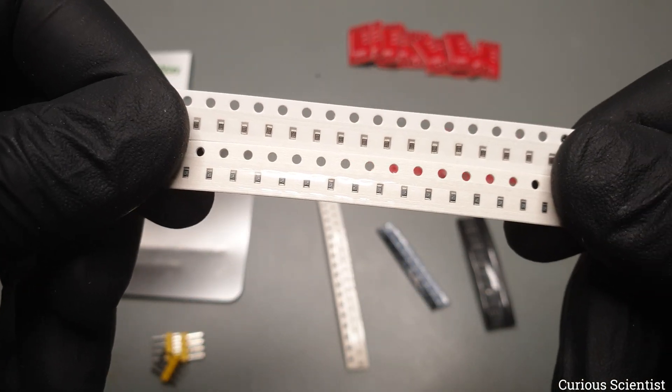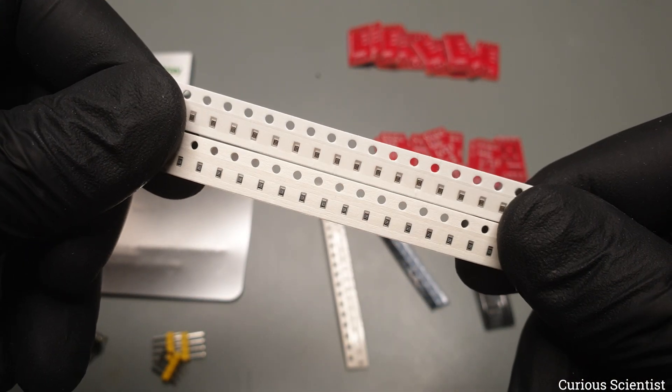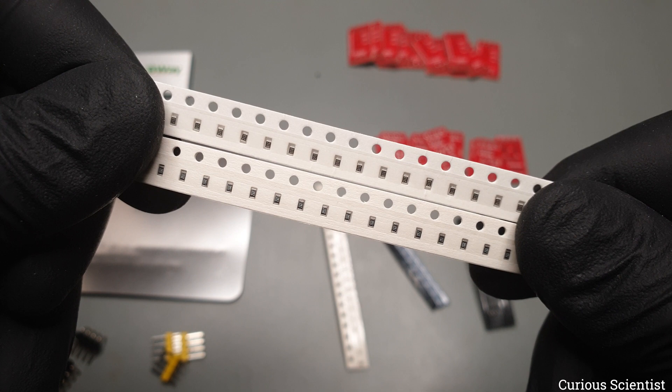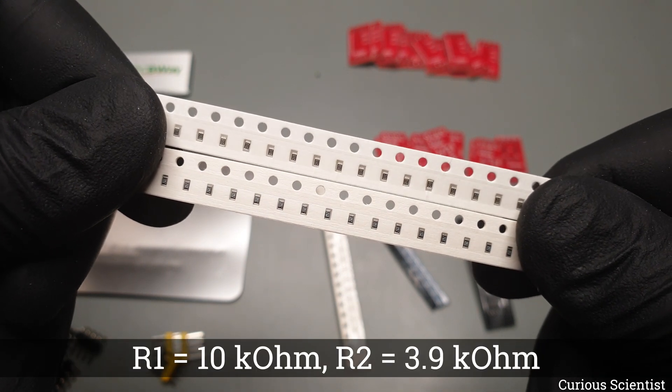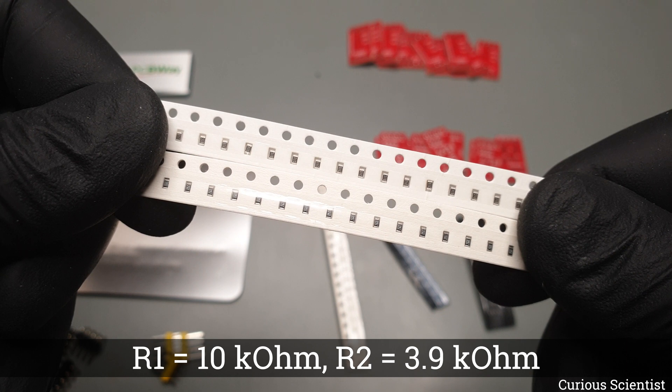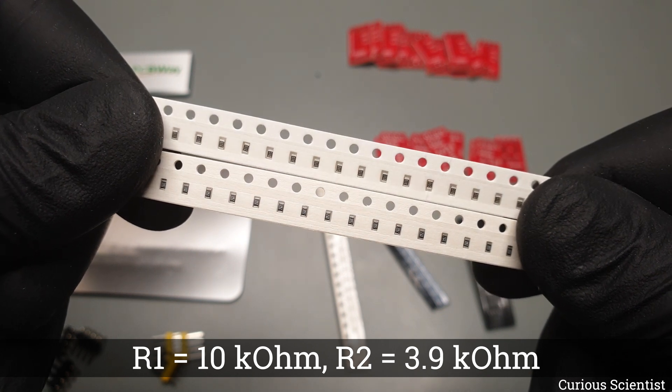Then, to extend the default voltage range of the ADC of the microcontroller, the circuit has a voltage divider. So I need these 10K and 3.9K resistors to increase the voltage range to 12V instead of the original 3.3V.